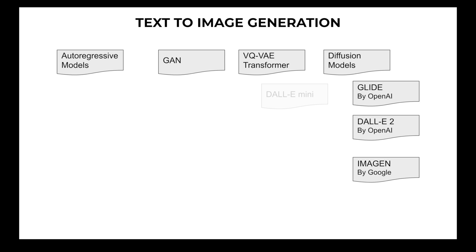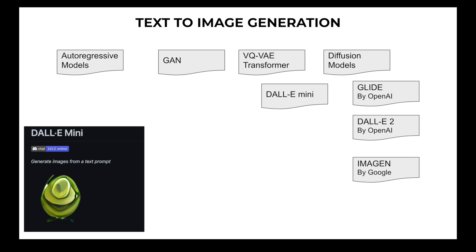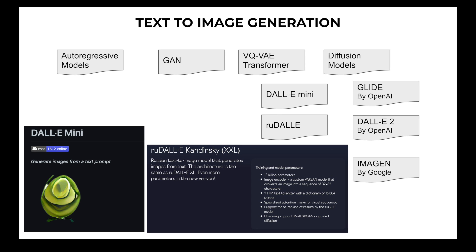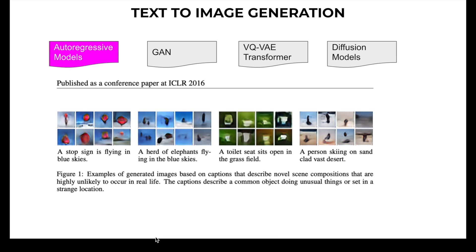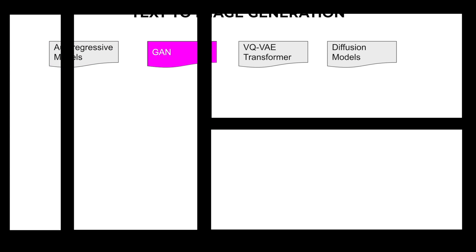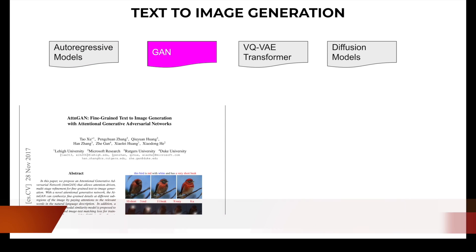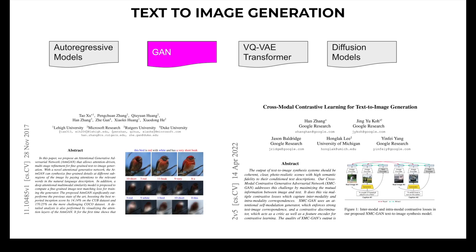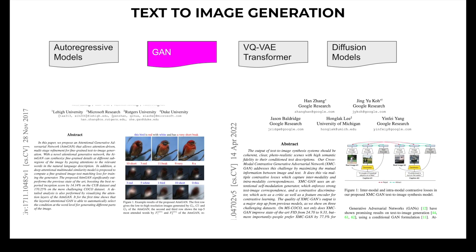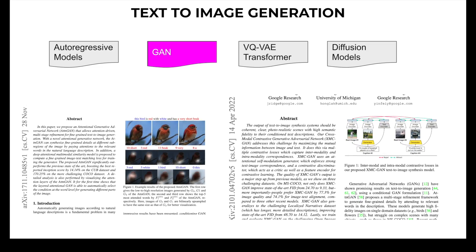Examples of VQ-VAE transformer-based text-to-image generation include DALL-E Mini, Mega, and RuDALL-E. Based on the research paper published at ICLR 2016, the promise of autoregressive models was first demonstrated through the paper 'Generating Images from Captions with Attention.' Next came GAN-based work, including the Attention GAN paper on November 27th, and another paper titled 'Cross-Modal Contrastive Learning for Text-to-Image Generation' from April 2022.